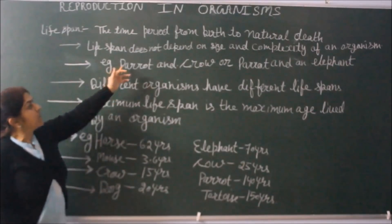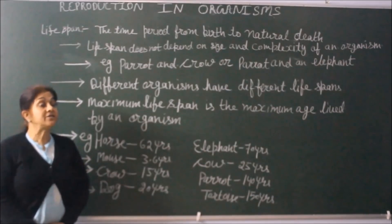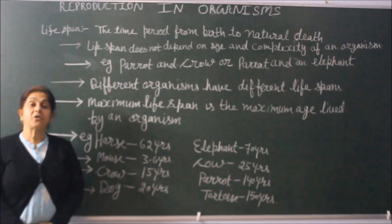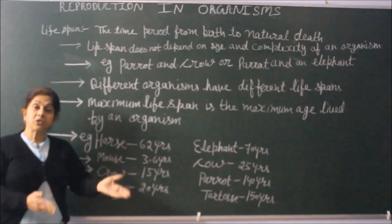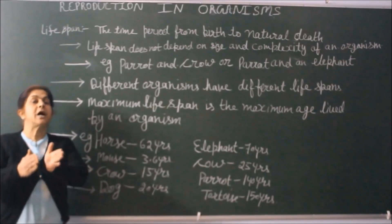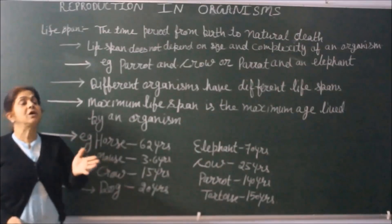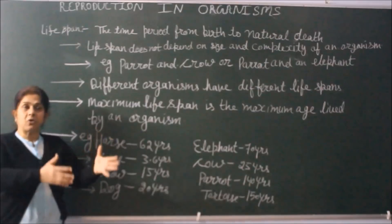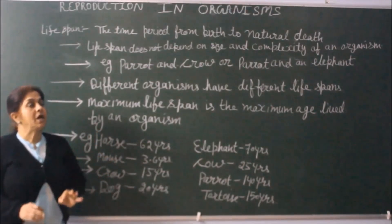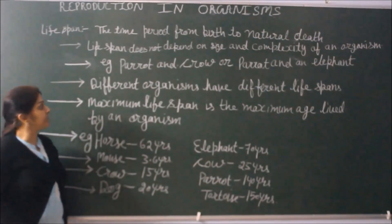Now, what are various factors on which lifespan depends? Lifespan does not depend on size or complexity of an organism. There is lots of diversity on this earth — from unicellular bacteria and simple protozoans up to highly complex organisms, all with different lifespans. We will look at different plants and animals on this earth, each having their specific lifespan. Some examples are mentioned here.